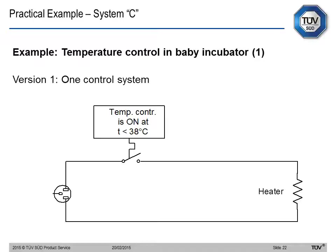Let's look at an incubator example — it's simplistic, not exactly a real incubator. We have a generator that heats up a heater, and the temperature raises to keep the baby warm. In system C, we have one control system with one switch. The switch is on and the heater heats up, but when the temperature reaches close to 38 degrees, the switch opens the circuit and the heater cools down, preventing the temperature from exceeding 38 degrees. What can go wrong? In the worst case, the switch doesn't open the circuit, the heater keeps heating up, and we have a hazard for the patient.